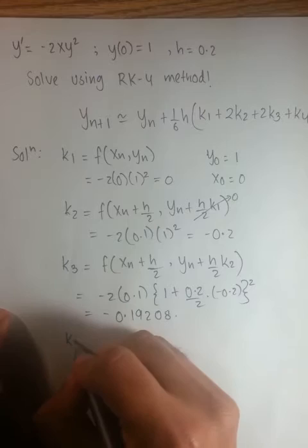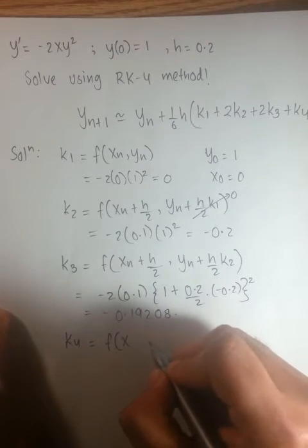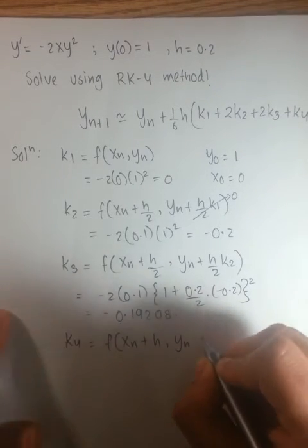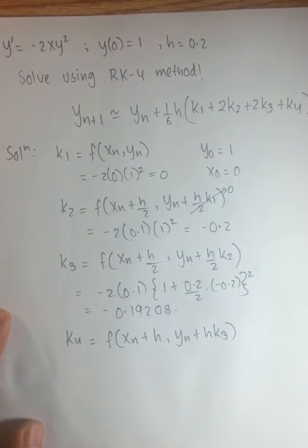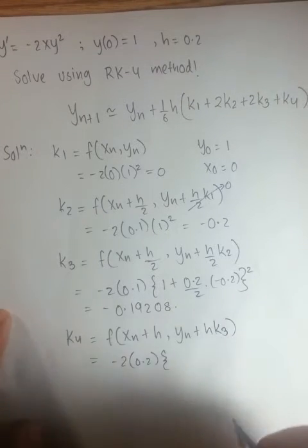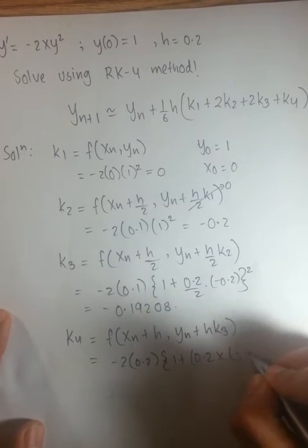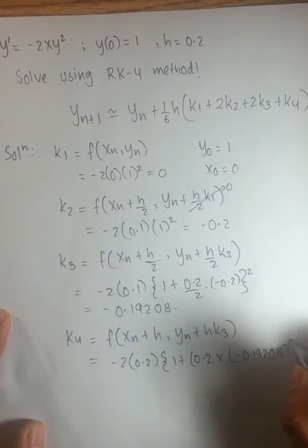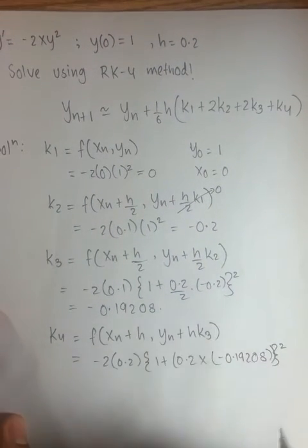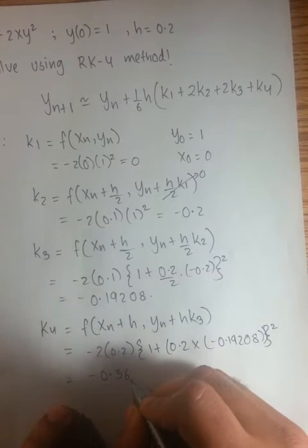So we are done with k3. Now moving on to k4. That's the last k value that we have to find. The formula says it is a function of xn plus h, yn plus h times k3. Plugging in the values, you would get 2 times 0.2. And the y value turns out to be 1 plus 0.2 times negative 0.19208. And this value is negative 0.3698.